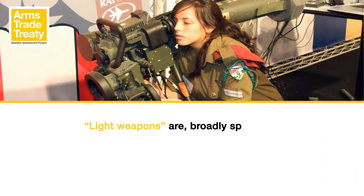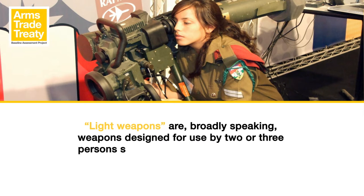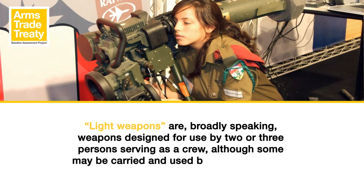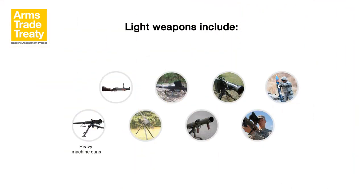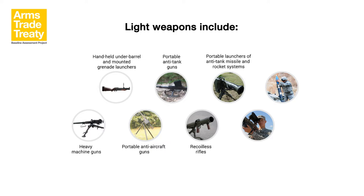Light weapons are, broadly speaking, weapons designed for use by two or three persons serving as a crew, although some may be carried and used by a single person. They include, inter alia, heavy machine guns, handheld under-barrel and mounted grenade launchers, portable anti-aircraft guns, portable anti-tank guns, recoilless rifles, portable launchers of anti-tank missile and rocket systems, portable launchers of anti-aircraft missile systems, and mortars of a calibre of less than 100 millimetres.